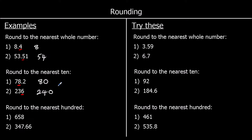Rounding to the nearest 100. The same thing — we want to round to the nearest 100, so look at the column down, which is the tens, and ask is it 5 or above? If it is, round up. If it isn't, leave it as it is. So we're rounding up — it's 700. It's closer to 700 than it is to 600.